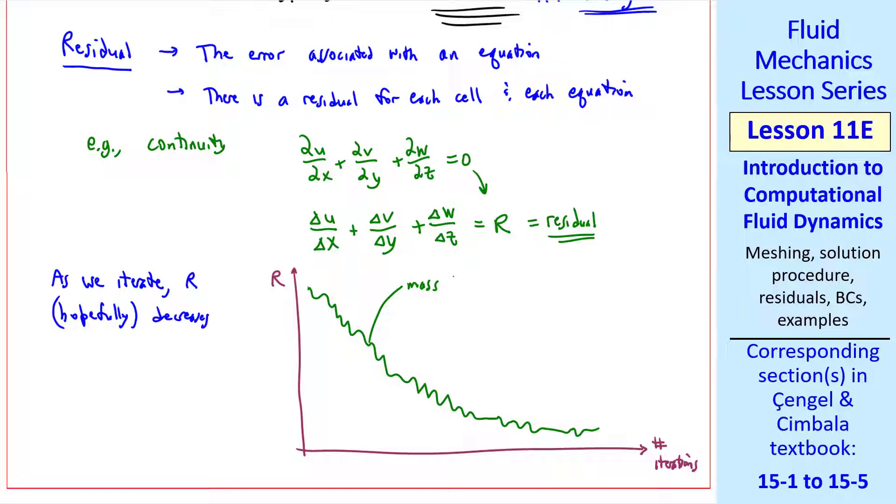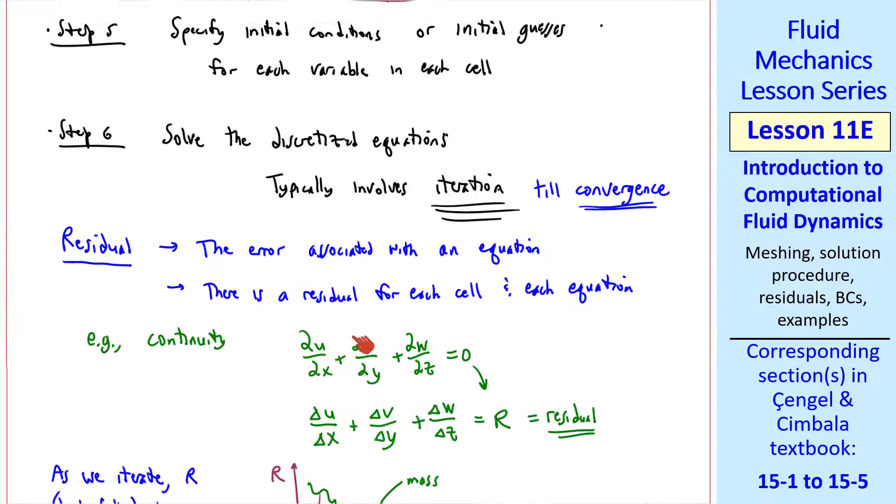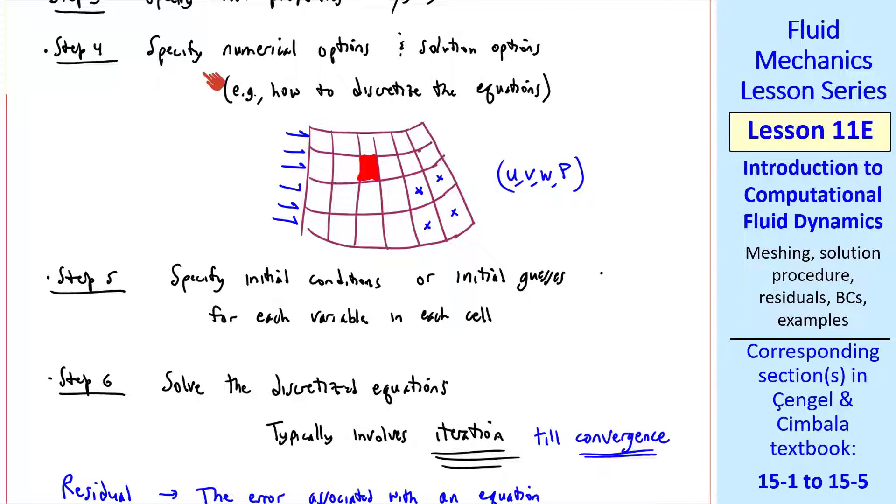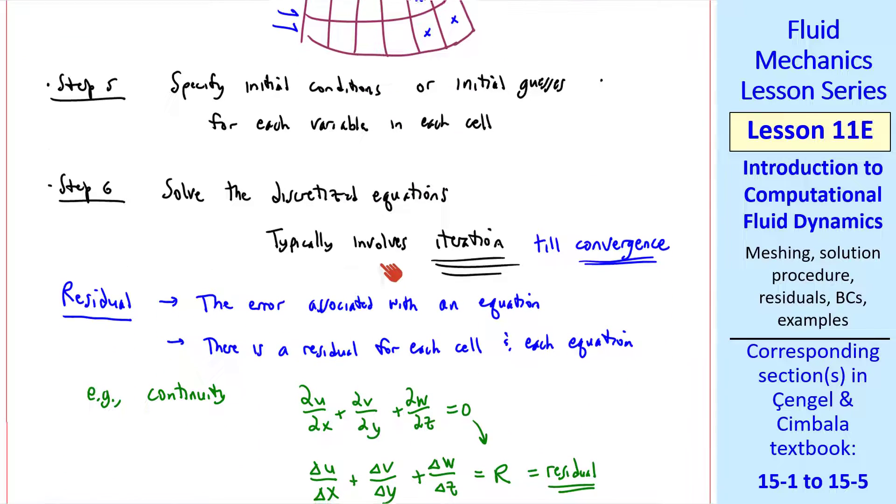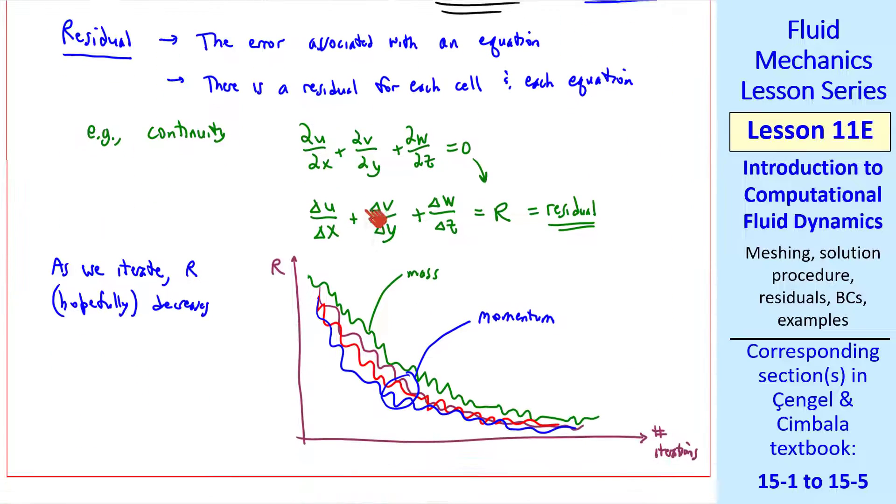You'll have similar residual behavior for the other residuals, for example, the three components of momentum. If these residuals don't decay, then your solution is not converging. If the residuals go up, you could have a case where the whole thing blows up. In that case, you'd have to go back to step four and change some of your numerical options or the solution options. Or you may have some problems with your grid or your boundary conditions that need to be fixed before you can get a good solution.